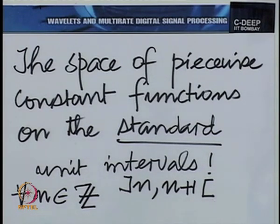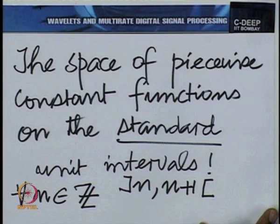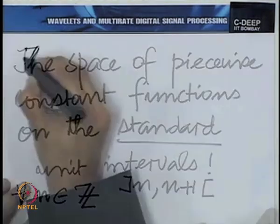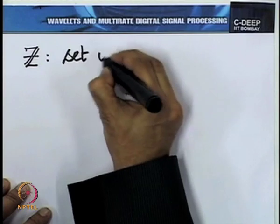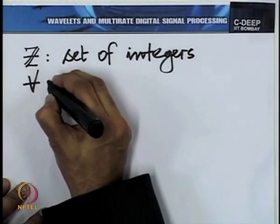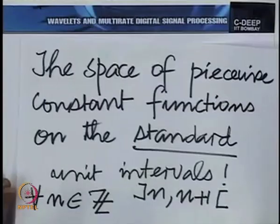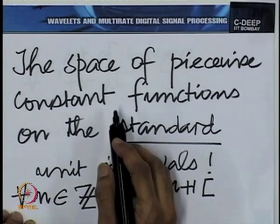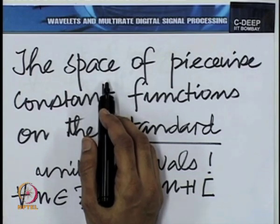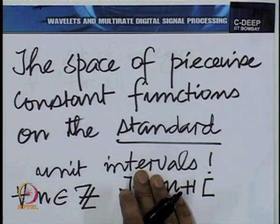We will use the notation script Z to refer to the set of integers. A linear space of functions is a collection of functions any linear combination of which comes back into the same space. If I add two functions, it goes back into the same space. If I multiply a function by a constant, it goes back into the same space.